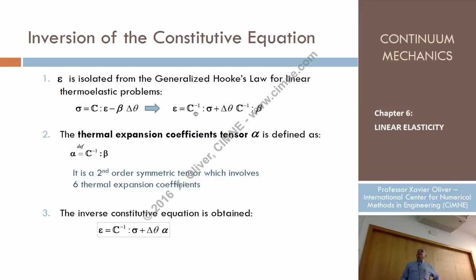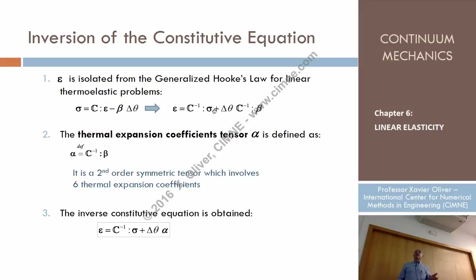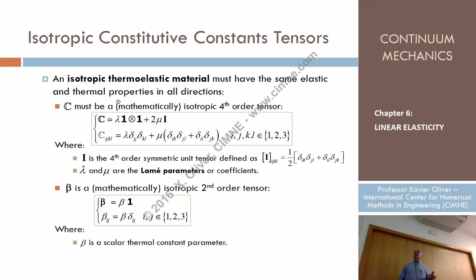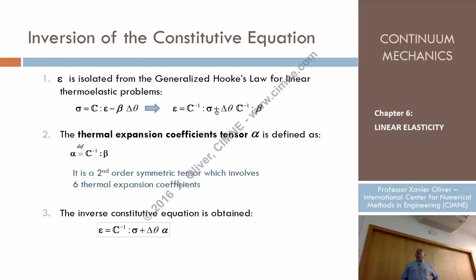The difference again is that this is what we had in the isothermal case. This part provides us what are the strains produced by some stresses if we have no changes of temperature. Now the difference is that we have to add some term here. So the strains have a part which depends only on the stresses, plus — note that sign here is plus. Don't mix that with the case in terms of stresses. In terms of stresses we have minus here; in terms of the strains we have plus here. Something proportional to delta theta — so when the temperature doesn't change, delta theta is zero and the equation remains as before — multiplied by C⁻¹ times beta.